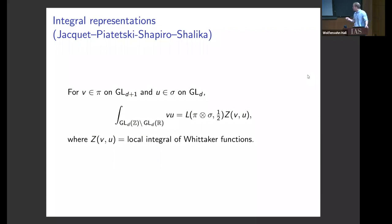One way to estimate moments using such an identity is to first establish analytic properties of the L function, write down an approximate functional equation, expand in terms of coefficients, and apply your favorite trace formula like the Kuznetsov formula. Another way, to which many people have contributed, is to study the integral representation directly and apply something like a Parseval identity or a pre-trace formula to carry out the average over π and σ. To do that, you need to understand both the integrals of automorphic forms and the integrals of Whittaker functions, for sufficiently interesting choices of vectors.